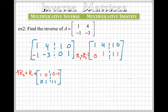Perfect. So right here is the reduced row echelon form, and here is our inverse. And so we can write A inverse equals negative 3, negative 4, 1, 1.